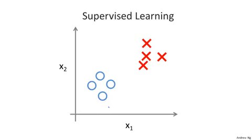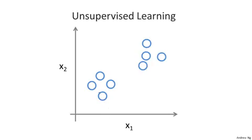In unsupervised learning, we're given data that looks different than data that looks like this, that doesn't have any labels or that all has the same label, or no labels. So we're given the dataset and we're not told what to do with it and we're not told what each data point is. Instead, we're just told, here is a dataset, can you find some structure in the data?